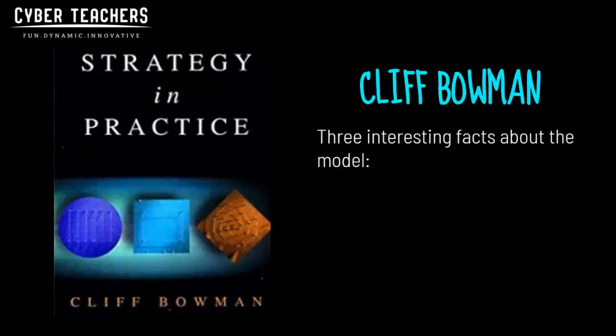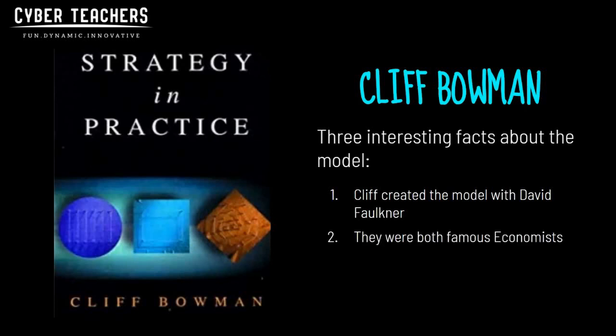We're looking at Cliff Bowman's Strategic Clock, and there are three interesting facts about this model. The first one is it was developed in partnership with his colleague, David Faulkner. They were both economists. Economists are experts who study the relationship between society's resources and its production or output. It can range from a small or local community to an entire nation, or even the global economy.